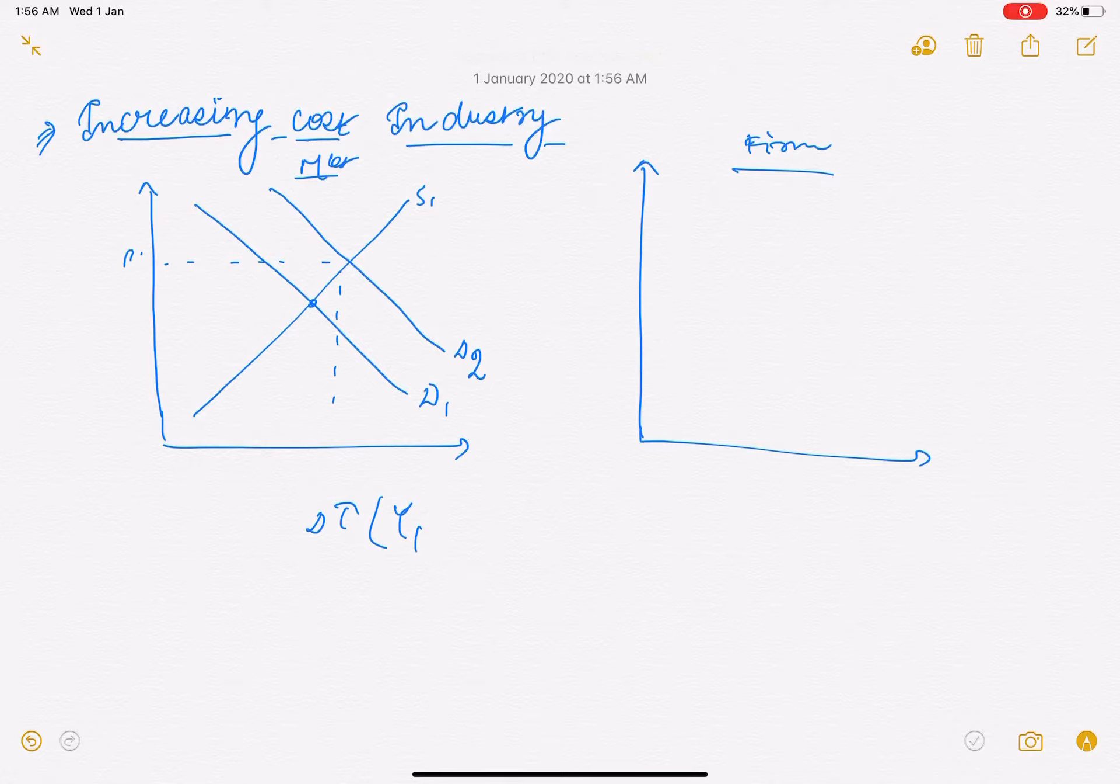Toh is situation mein hum log kya kehte hain - this was the optimal. Agar price bhi increase ho rahi aur quantity bhi increase ho rahi hai toh matlab super normal profit hoga hai long run mein. This is the point.